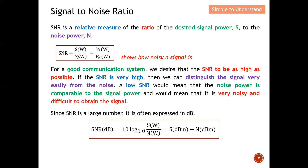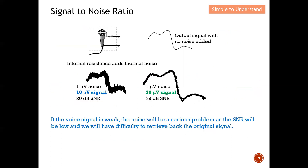A very small SNR means the signal and noise are very close to each other, causing difficulty distinguishing the signal. A very large SNR means the signal is much stronger than the noise, so there is no issue. The dB equation for SNR is: SNR(dB) = 10 log(S/N), where the ratio division becomes subtraction in decibels.